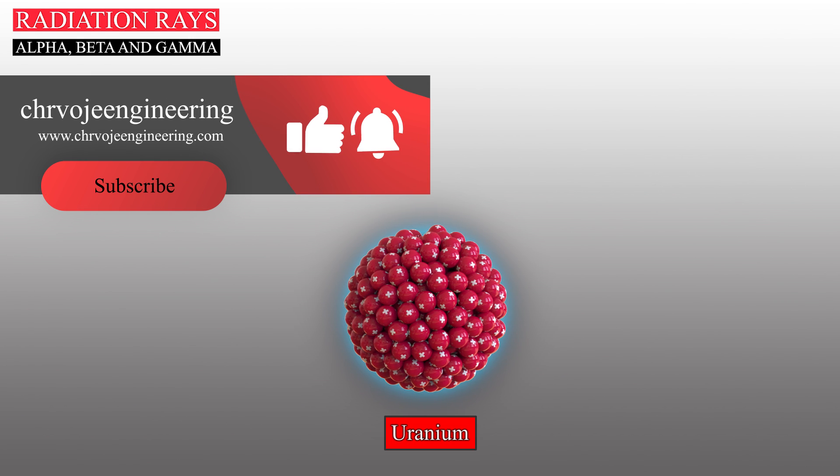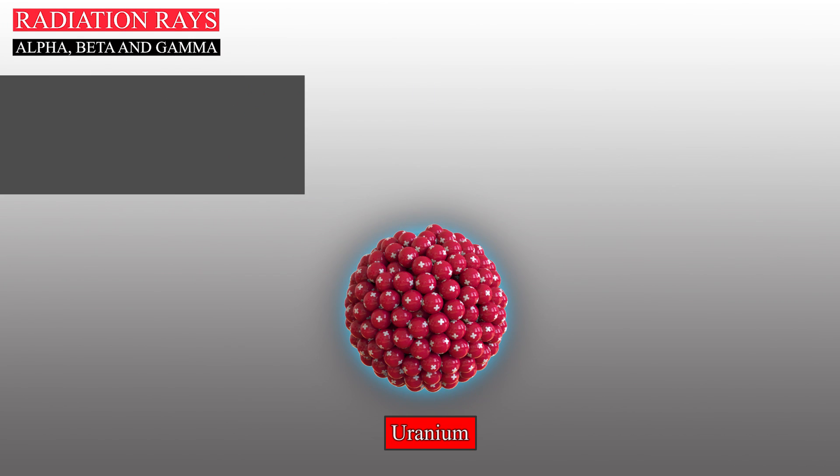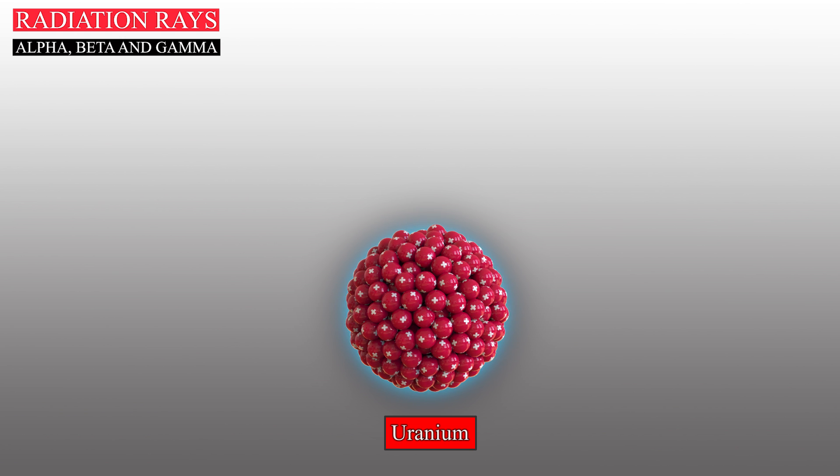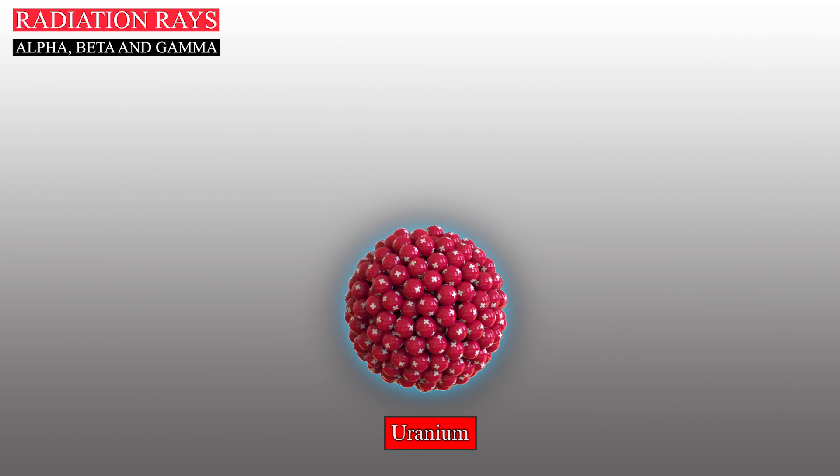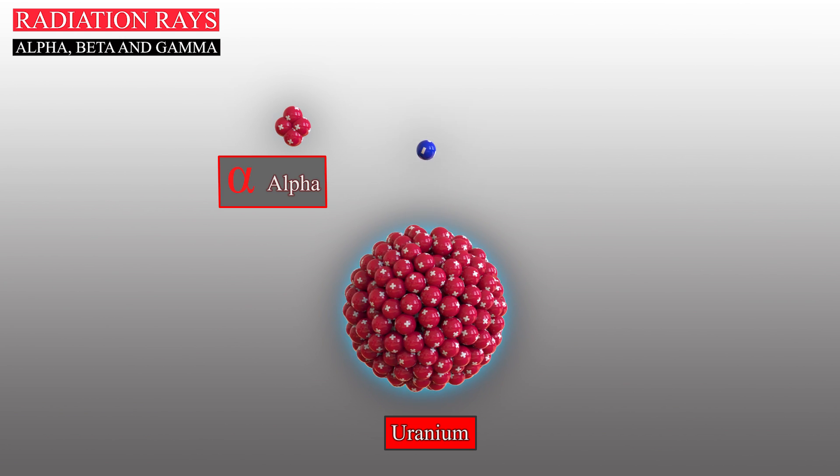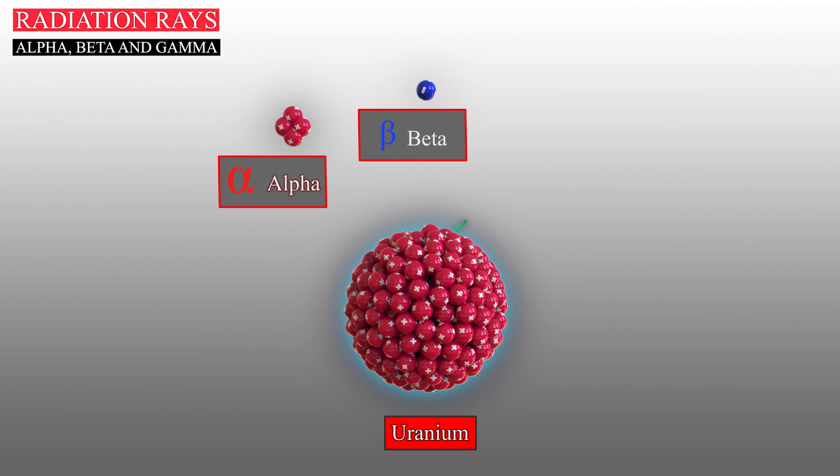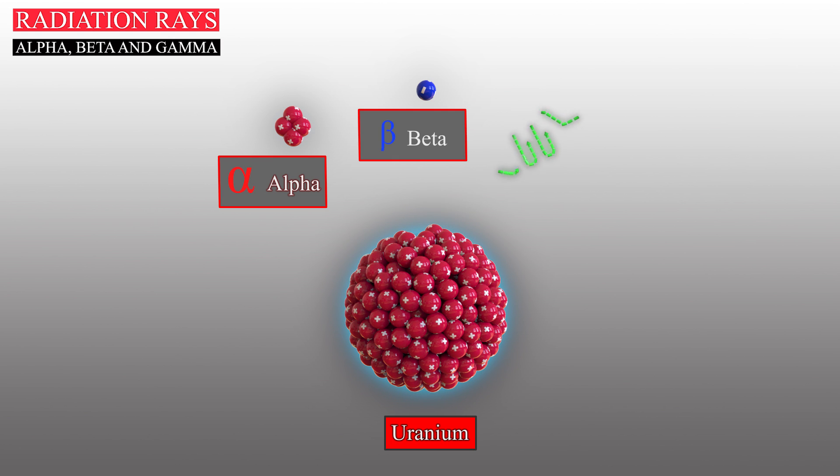Hi and welcome back to the Si Havoy Engineering YouTube channel. The nucleus of radioactive material emits three different types of radiation rays called alpha, beta and gamma.